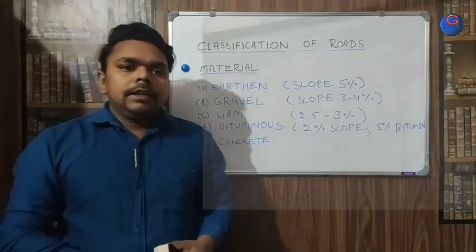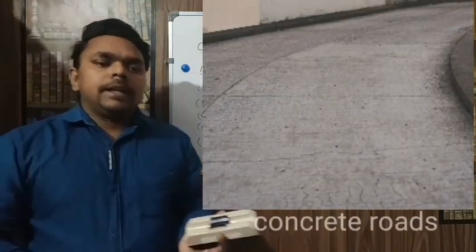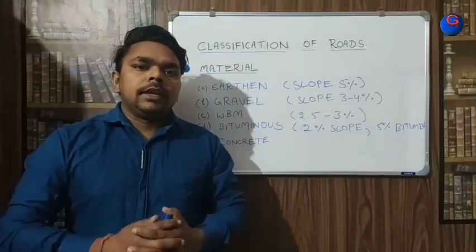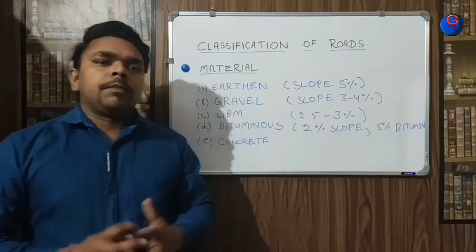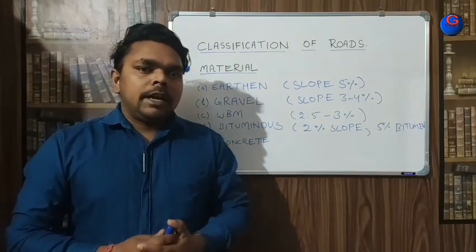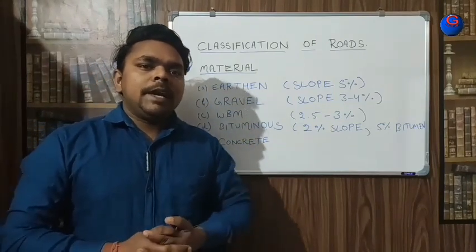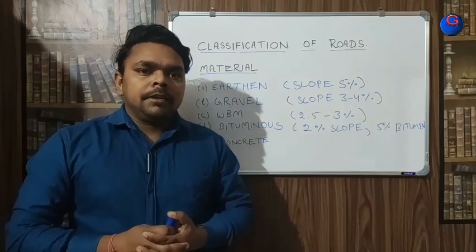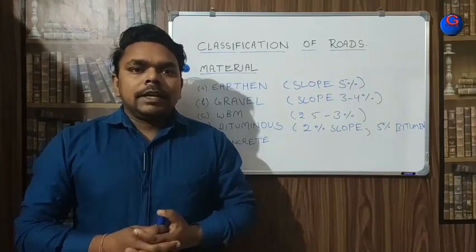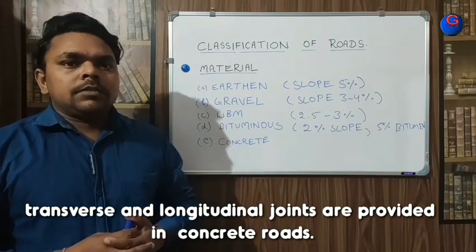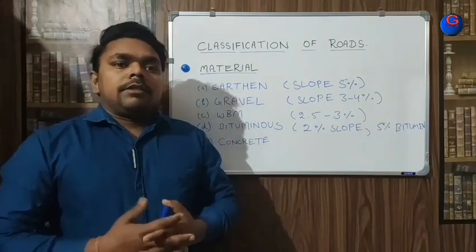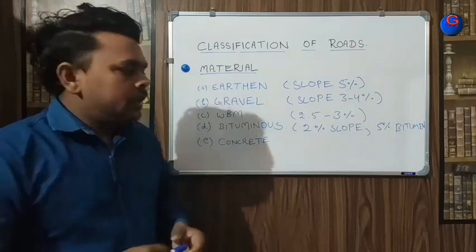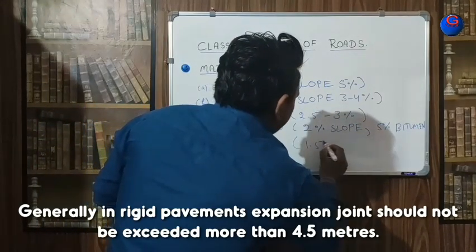Finally, concrete roads are a type of rigid pavement. The key difference between flexible and concrete roads is the wearing course: in concrete roads we provide a concrete slab, compared to flexible roads which use DBM (Dense Bituminous Macadam) and SDBC (Semi-Dense Bituminous Concrete). Concrete roads are costlier than bituminous roads but are very rigid and preferred in high traffic areas. The cross slope provided in concrete roads is 1.5 to 2 percent.